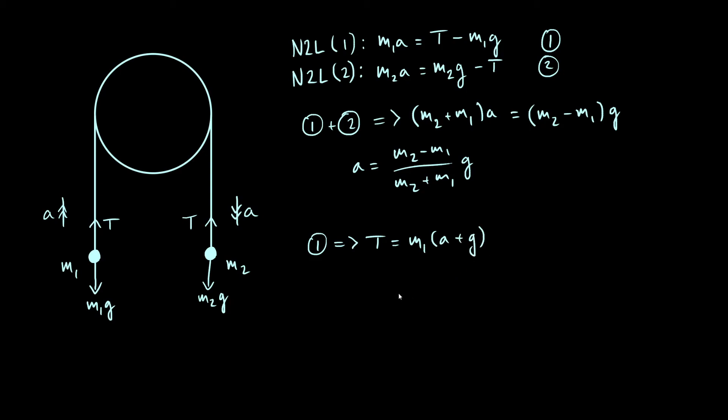Okay, so what can we do with this? We just plug in the acceleration that we found just now. So we are going to find that this simplifies to M1, I'm going to factorize out a G because acceleration also has a factor of G, so we're going to get M1G times M2 minus M1 over M2 plus M1 plus one from this G over here.